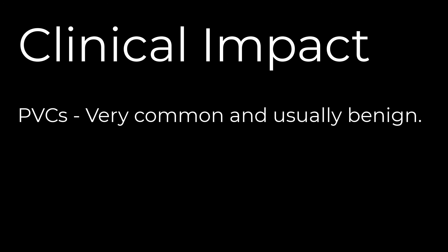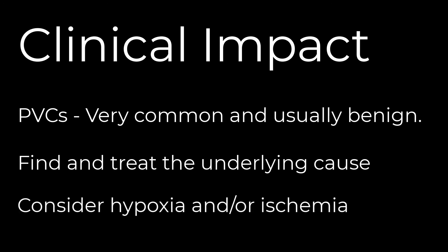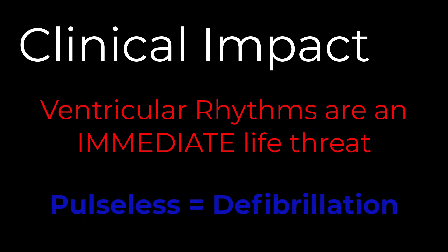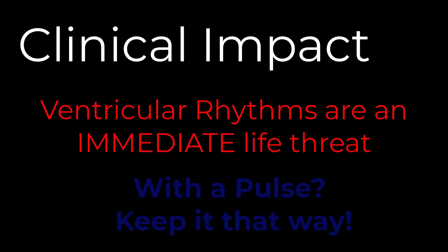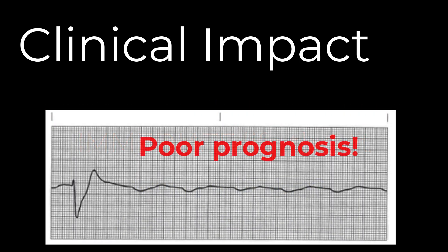What are the clinical implications? PVCs are incredibly common and generally well tolerated. Treatment, if needed at all, is focused on reducing hypoxia or ischemia and treating underlying problems. Ventricular rhythms, on the other hand, are an immediate life threat. If already pulseless, V-tach is a shockable rhythm and needs defibrillation as quickly as we can deliver it. In V-tach with a pulse, we must act quickly with either cardioversion or medication to correct the rhythm or it is likely to deteriorate rapidly. Slow ventricular rhythms without a pulse are an ominous finding and are unlikely to respond to resuscitation.